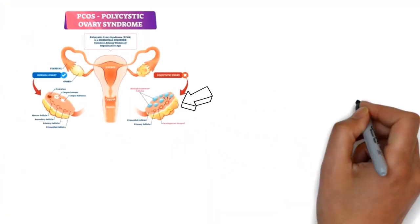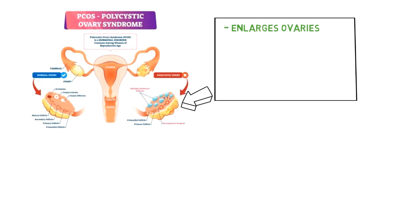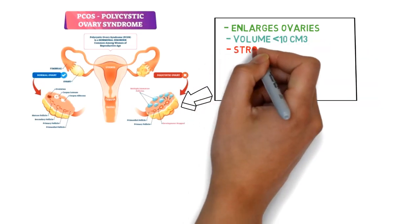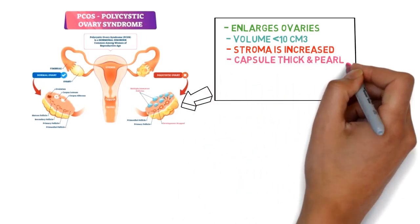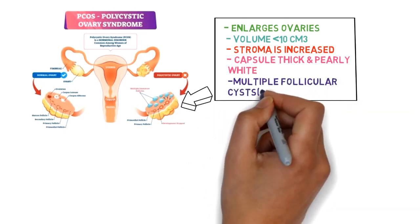Talking about the pathology involved, the ovaries are enlarged, the volume is more than 10 cm cubed, the stroma is increased, the capsule is thickened and pearly white in color, and there are multiple follicular cysts of more than 2 to 9 mm in diameter.